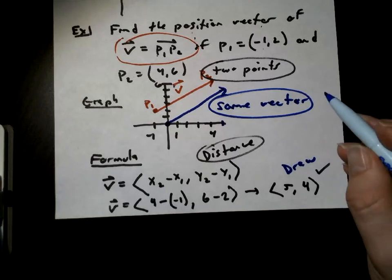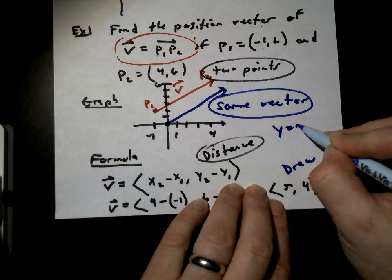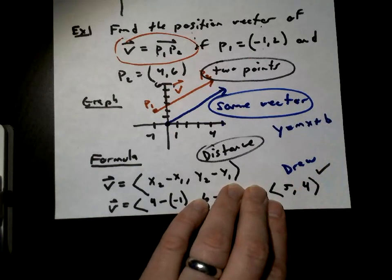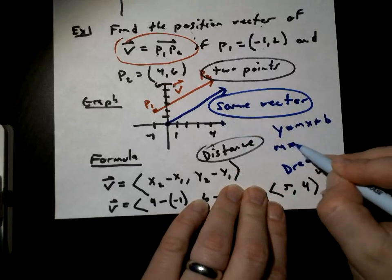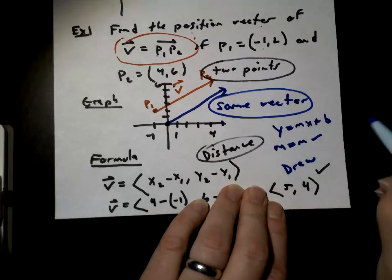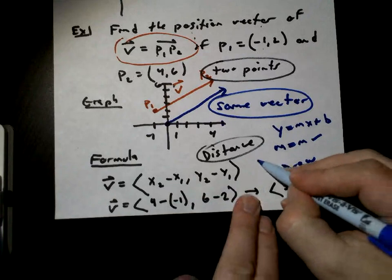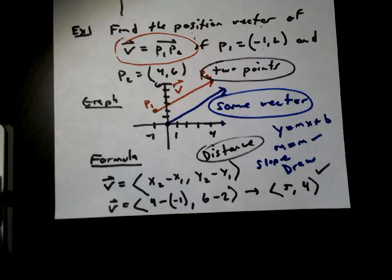Notice that if you remember y = mx + b — if these vectors are parallel, their slopes are going to be the same. That's how you find a position vector.